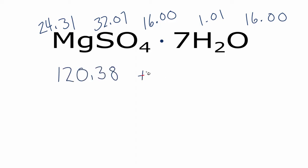And to that, we're going to add seven times the molar mass of water. The molar mass of water turns out to be 18.02. Then we'll add those two numbers together, so we'll multiply 7 times 18.02 and add that to the 120.38.